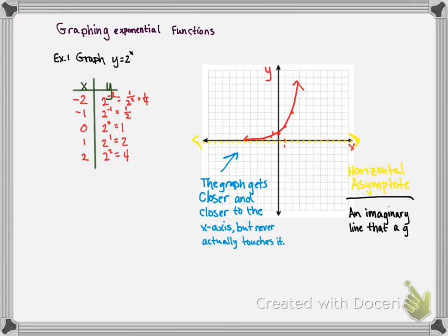So, an asymptote is an imaginary line that a graph gets closer to, but never touches. In general, we've seen both horizontal and vertical asymptotes in the past. Exponential functions will have horizontal asymptotes.